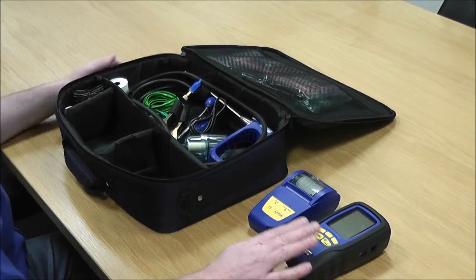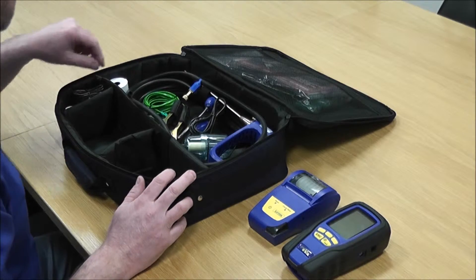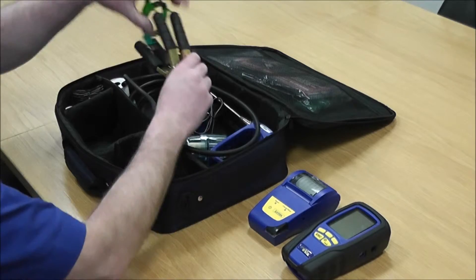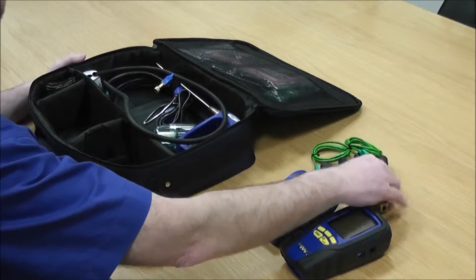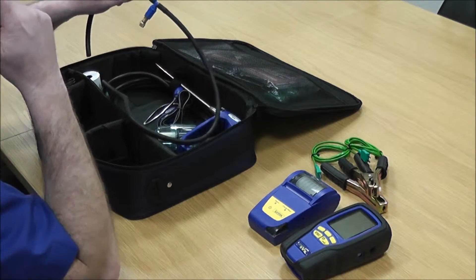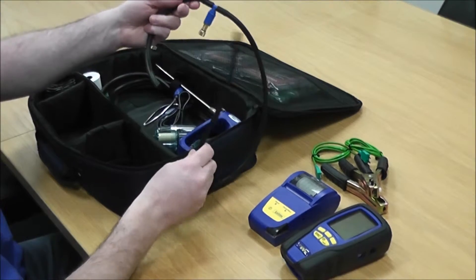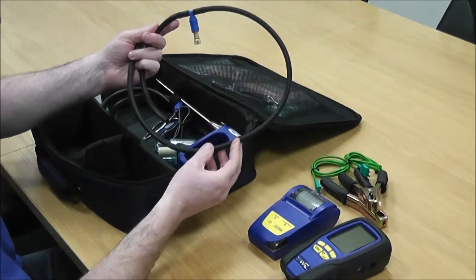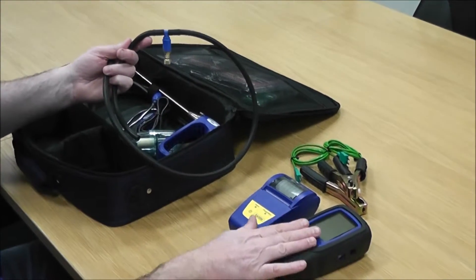It comes with two temperature clamp probes for doing your flow and returns, and a pressure relief valve which helps when you're doing let-by and tightness testing. You can also print results from the analyzer.